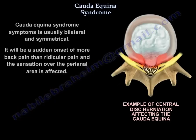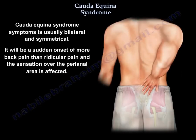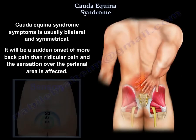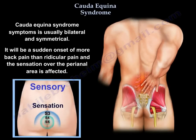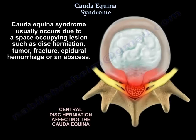Cauda Equina syndrome symptoms are usually bilateral and symmetrical. There will be a sudden onset of more back pain than radicular pain, and the sensation over the perianal area is affected. Cauda Equina syndrome usually occurs due to a space-occupying lesion such as disc herniation, tumor, fracture, epidural hemorrhage, or an abscess.